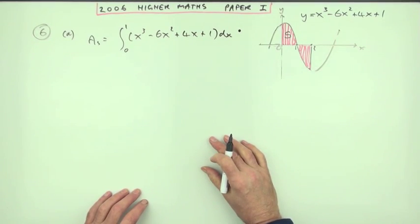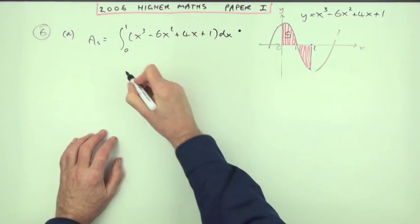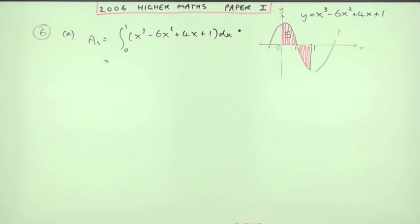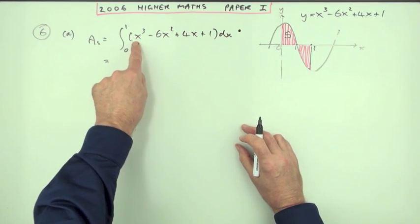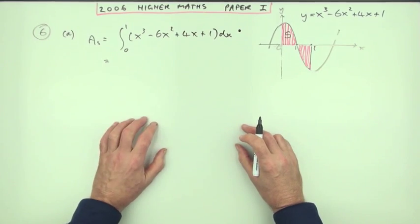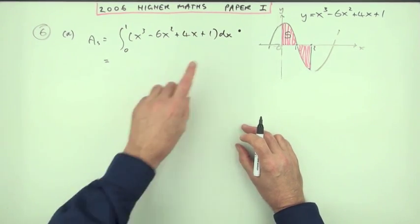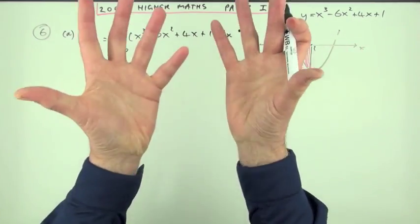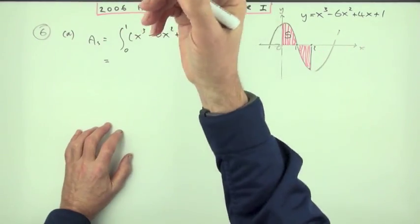So, x cubed minus 6x squared plus 4x plus 1 times the width of the little rectangles, length times breadth dx. And then you add them all up, going from zero to one. Remember, that's an elongated S for the summation. That's the first mark. Knowing to integrate, but setting it all out. Now, the next mark is for integrating, not differentiating.